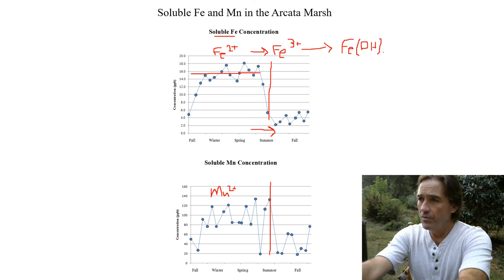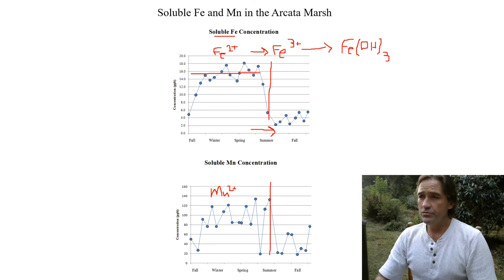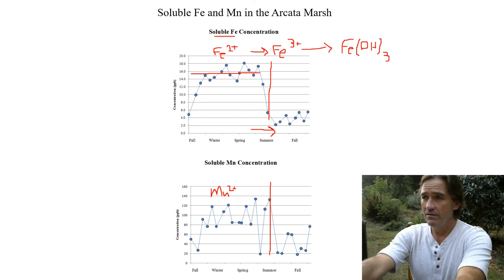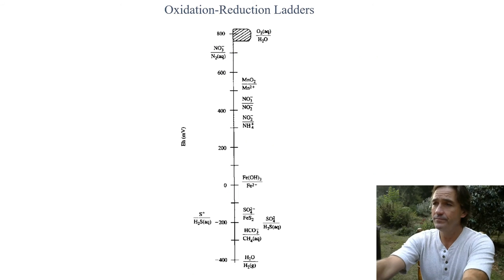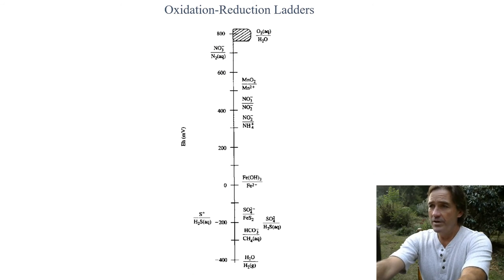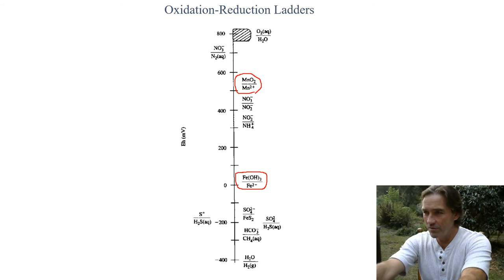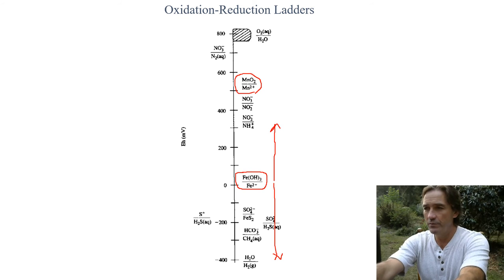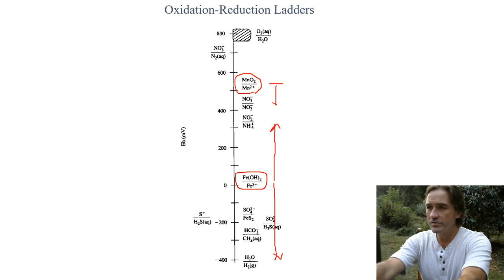The same goes for manganese. Whether an environment is reduced or oxidized affects the species that's present for a given element. Here is our couples for manganese. Here's the couple for iron. You can imagine anything below this point, it's going to be iron two plus and we'll get soluble iron. Anything above more positive, we would get iron hydroxide. And the same goes for manganese.